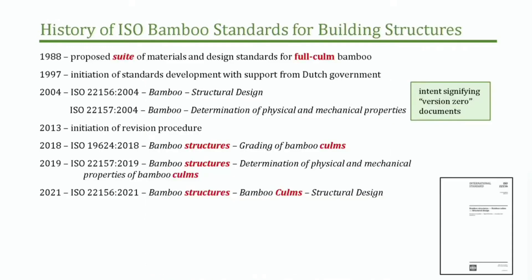I want to move on to bamboo and talk about our current suite of standards. Looking at a little bit of history: I'm talking about the ISO standards, the International Standards Organization. Back in the 1980s, there was proposed a suite of standards for full-culm bamboo. Funding from the Dutch government allowed work to proceed on the original ISO standards — 22156 and 22157 — which cover bamboo structural design and material properties and test methods. Those were led by Jules Janssen, who passed away sadly a few years ago. Khosrow was heavily involved in this effort as well, back in 2004 when these were first published.